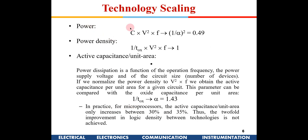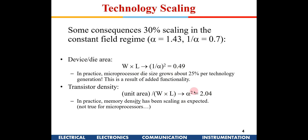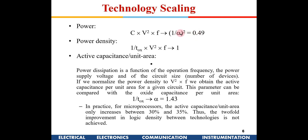For power, the equation is P = C × V² × f. If capacitance is reduced, voltage is reduced, and frequency increases, substituting these values shows that the increase in frequency is compensated by the decrease in capacitance, but the decrease in voltage squared still provides a net reduction in power. As for power density: power reduces by α² while transistor density increases by α², so power density theoretically remains the same.